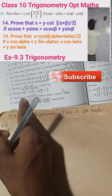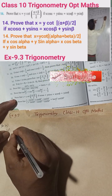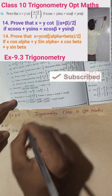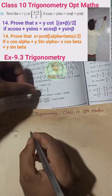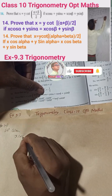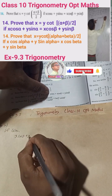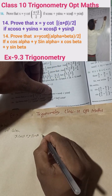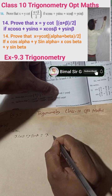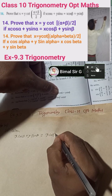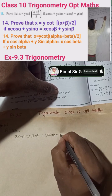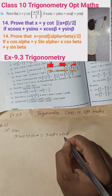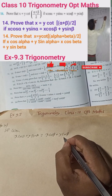Given: x·cos(α) + y·sin(α) is equal to x·cos(β) + y·sin(β). This is given.